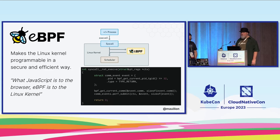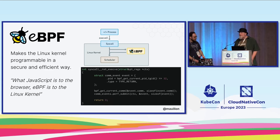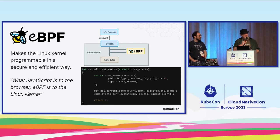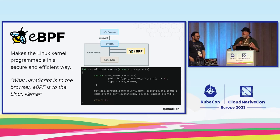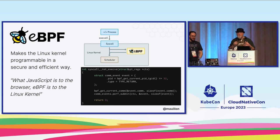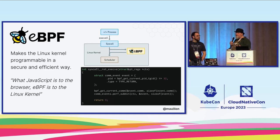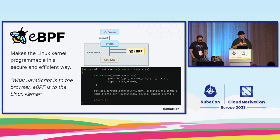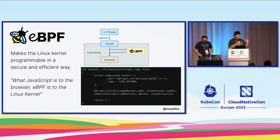Another way to think about it: if you think about the Linux kernel as an API — when I want to open a file, when I want to open a socket, whenever I want to do anything like that, I'm actually going to make an API call. eBPF gives me the ability to instrument any API call you can make to the Linux kernel.